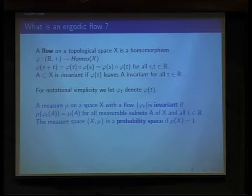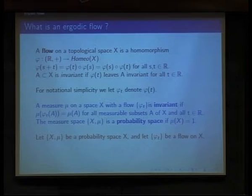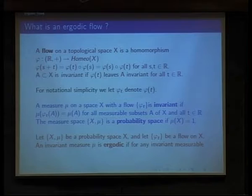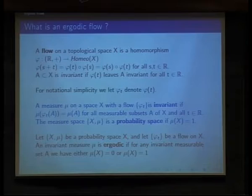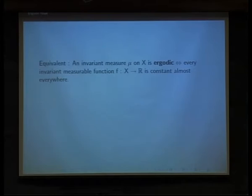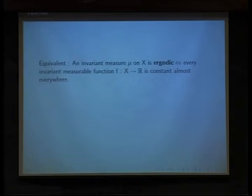I'm assuming that all measures have been normalized so that the total measure is one — such a space is called a probability space. We say that a measure μ is ergodic if for any invariant measurable set we have either measure zero or measure one. One equivalent way to express this is that every invariant measurable function is constant almost everywhere, because you can approximate measurable functions by finite sums of simple functions.